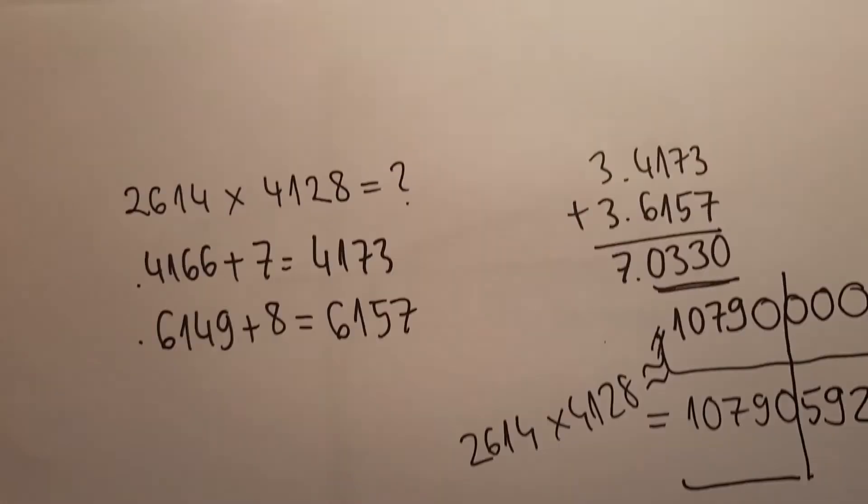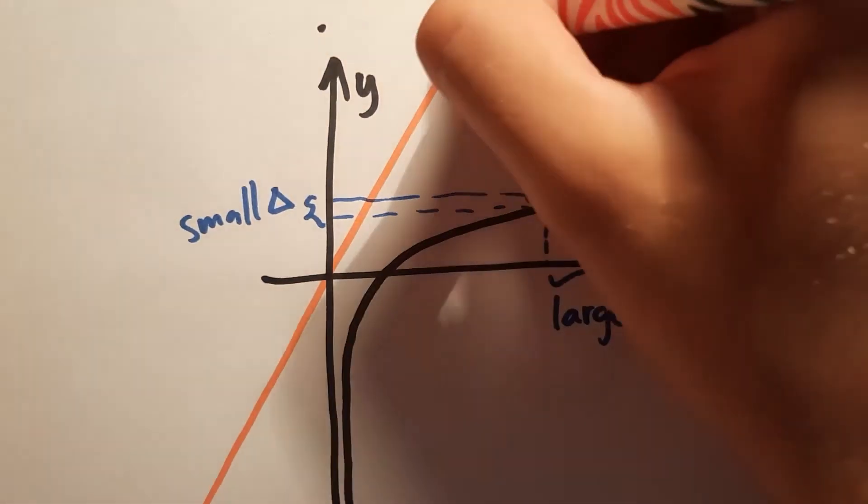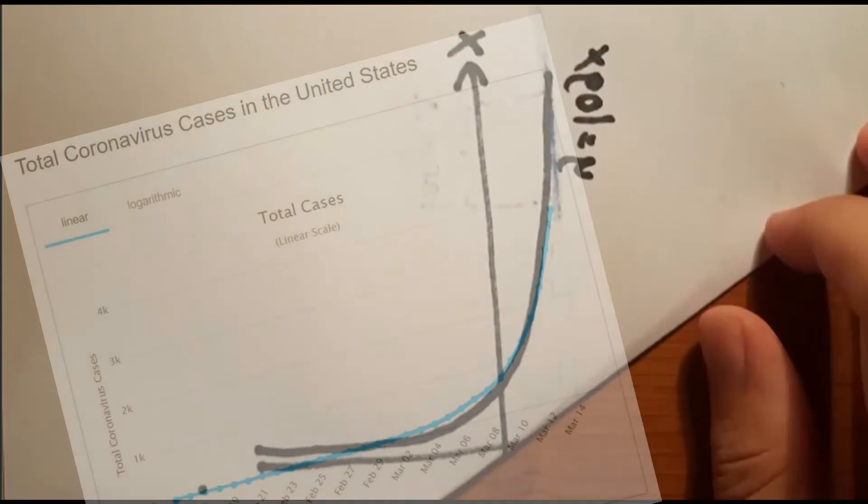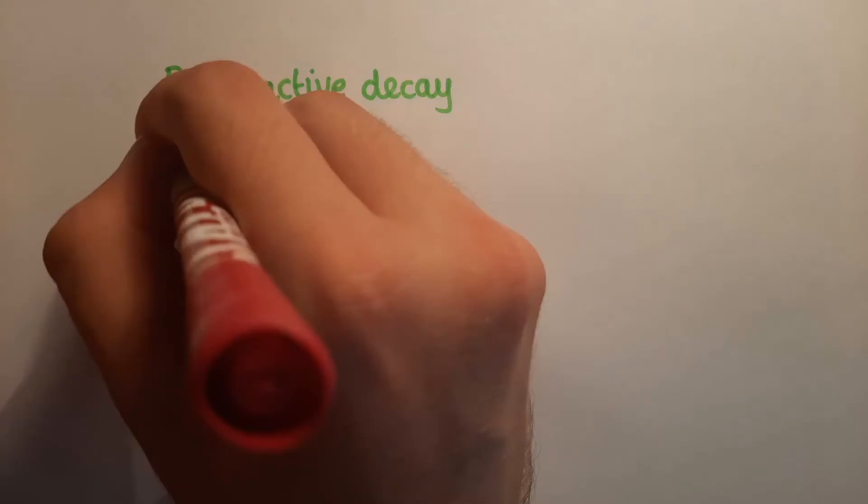When you fold the paper along y equals x to get a mirror image, you get a familiar exponential function, so logarithm is really just an inverse of a power.